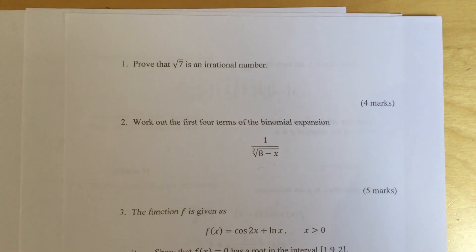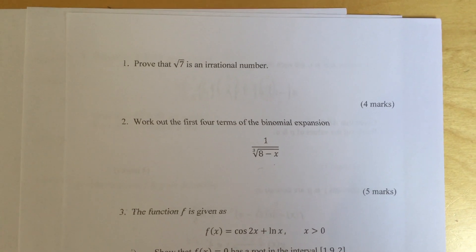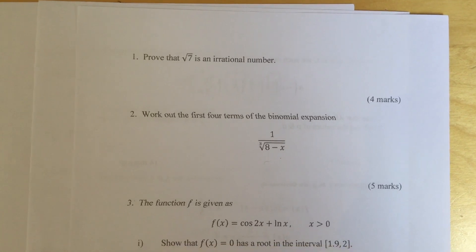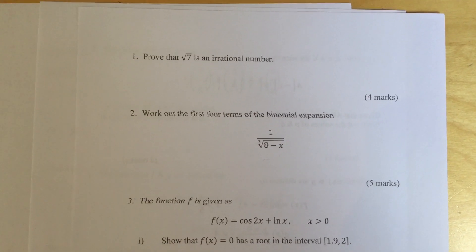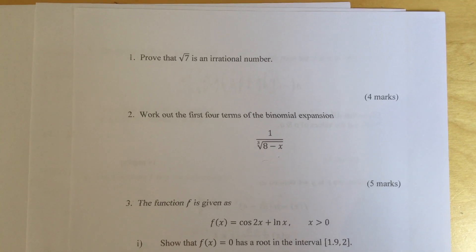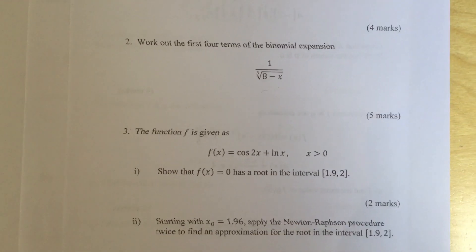Question 1: Prove that root 7 is an irrational number. Question 2: Work out the first four terms of the binomial expansion 1 over cube root of 8 minus x.